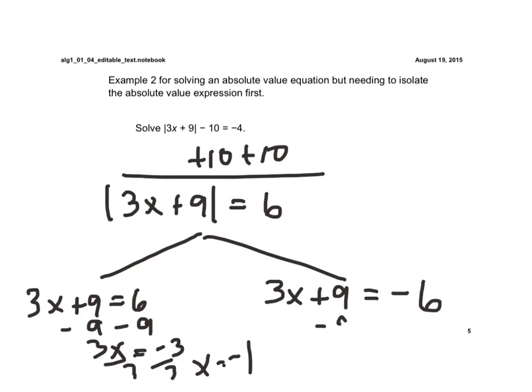Now we're going to subtract the 9 here. We get 3x is equal to a negative 15, divide by 3, and x is equal to a negative 5.